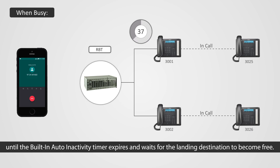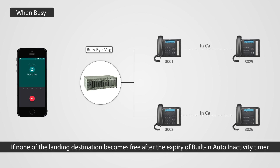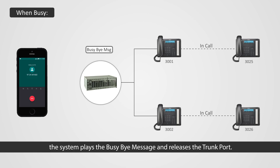When busy: the system plays the ringback tone message repeatedly until the built-in auto inactivity timer expires and waits for the landing destination to become free. If none of the landing destinations becomes free after the expiry of the built-in auto inactivity timer, the system plays the busy-by message and releases the trunk port.